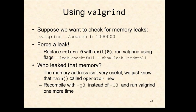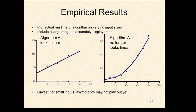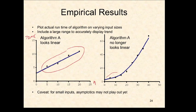When we get empirical results, we should plot them. Plotting four points with small input sizes might look like a line, suggesting O(n). But those same four points plotted with much larger input sizes may reveal the curve is actually more like O(n²). For small inputs we may not see the real asymptotic complexity - we may need to go out to larger n values to see the true trend.